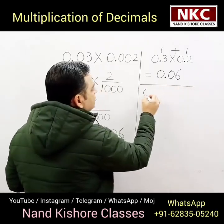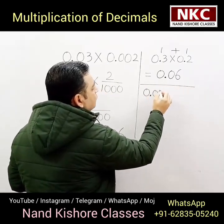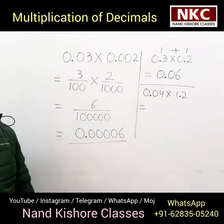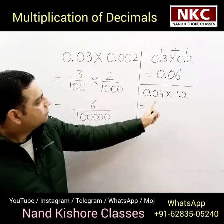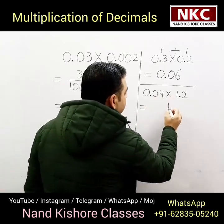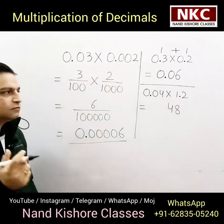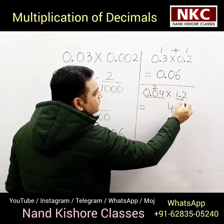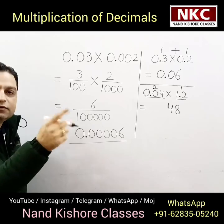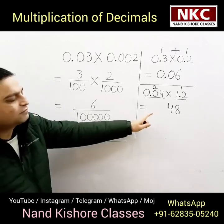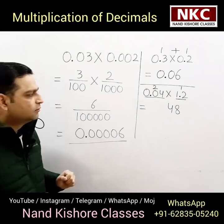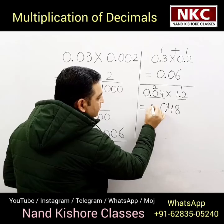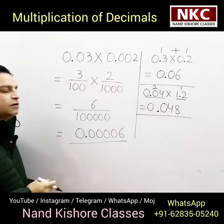For example, let's take one more question: 0.04 multiplied by 1.2. Forget about decimals — 4 multiplied by 12 is 48. Now, count the decimal digits: the first term has two digits after the decimal, the second has one digit. 2 plus 1 equals 3, so in my final answer, after the decimal, three digits should be there. Two are already there, so place one more zero. That means 0.048 is the answer.